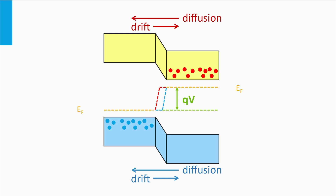Due to the reduced field — or in other words, the reduced slope — the drift of electrons and holes is reduced. In addition, the reduced width of the depletion zone enhances the diffusion.